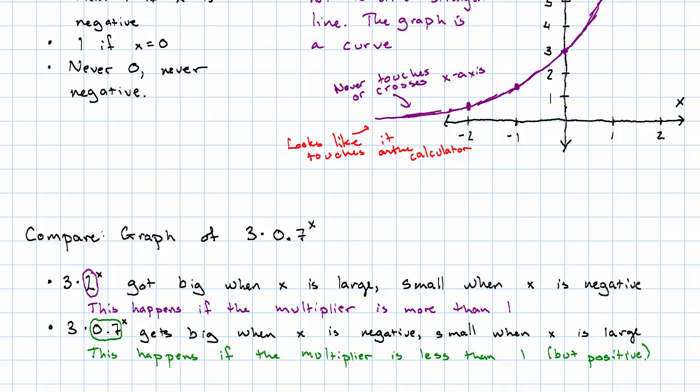We're not going to write down exponentials with multipliers that are exactly one, because that would be pretty boring. We just multiply by one over and over again, which doesn't do anything. We aren't going to write down exponentials with multiplier zero. Again, multiplying by zero over and over again doesn't do anything interesting. And we're not going to write down exponentials with negative multipliers because weird things happen.